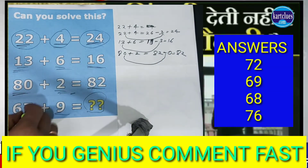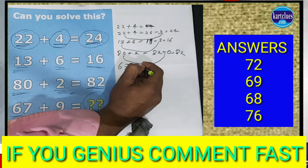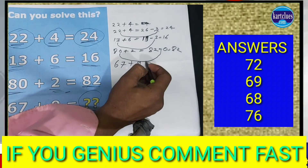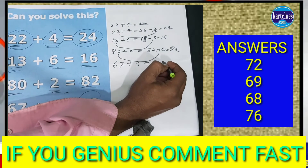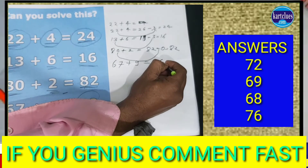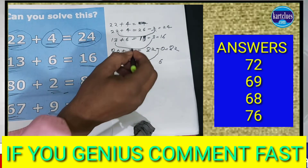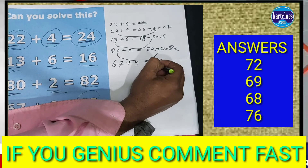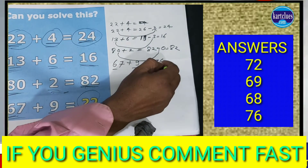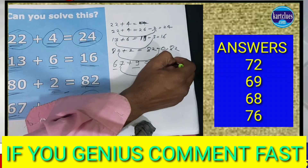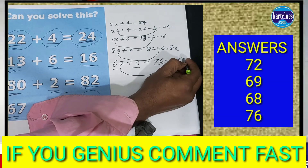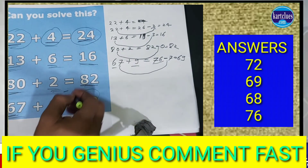Same pattern here also: 67 plus 9 is equal to 76. The digit total of 76 is 7 plus 6 equals 13, meaning 1 plus 3 equals 4. Then 76 minus 7 equals 69. So the answer here is 69.